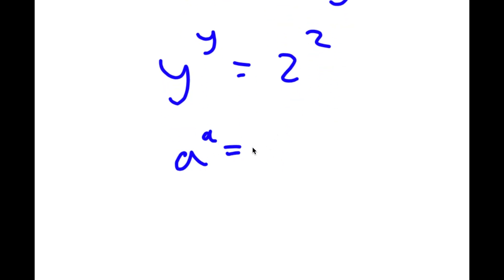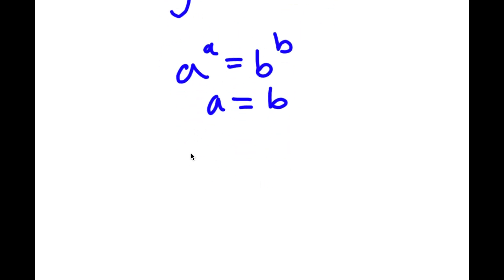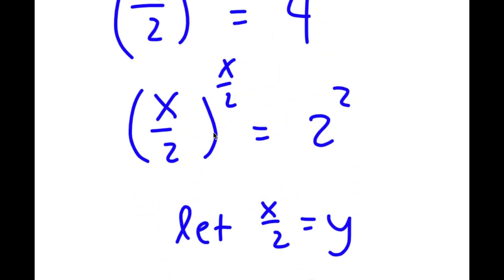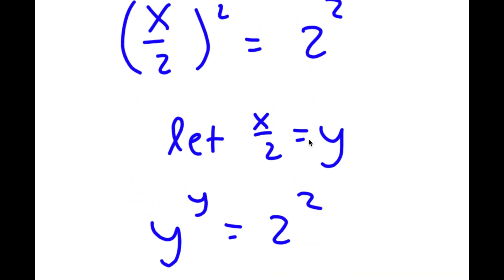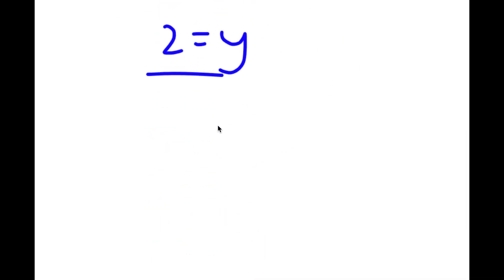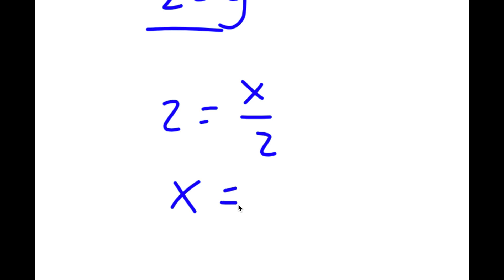If a^a equals b^b, it simply means a equals b. So in this case, y equals 2. Since we let x/2 equal y, and y equals 2, that means x/2 equals 2, so x equals 4.